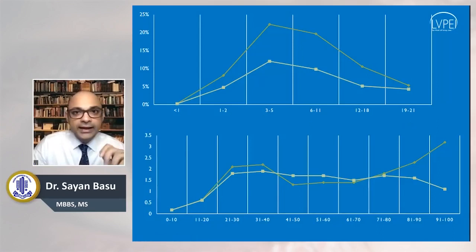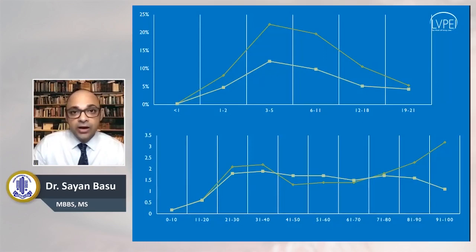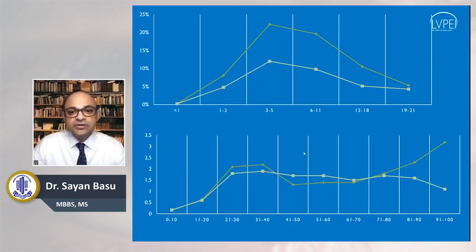So I showed you these two graphs to demonstrate two key points. One is that allergy is a disease of childhood and adolescence, whereas dry eye is mostly a disease of adulthood. Exceptionally you may find an adult with allergy, and exceptionally you might find a child with dry eye — but these are exceptions. Remember: allergy is a disease of childhood and adolescence; dry eye disease is a disease of adulthood.